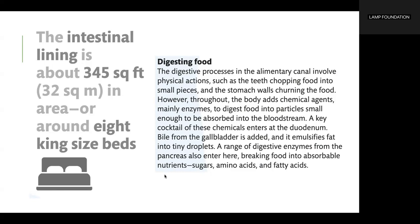A key cocktail of these chemicals enters at the duodenum. Bile from the gallbladder is added and it emulsifies fat into tiny droplets. A range of digestive enzymes from the pancreas also enter here, breaking food into absorbable nutrients: sugars, amino acids, and fatty acids.